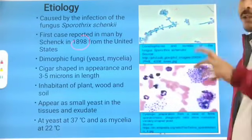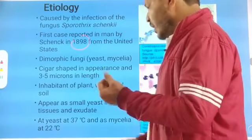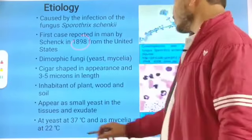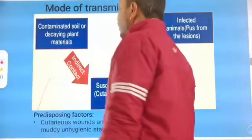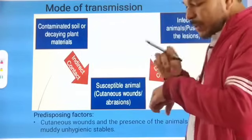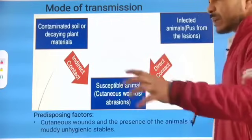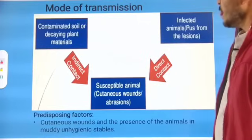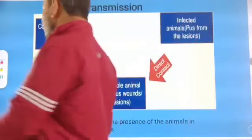The fungi are inhabitants of plant wood and soil. They appear as small yeast in tissues and exudate. At 37°C they grow as yeast and at 22°C as mycelia. The mode of transmission is through contaminated soil or decaying plant materials coming in contact with the susceptible animal, causing skin or tissue infection. Infected animals' pus from lesions can also be a source. Predisposing factors include cutaneous wounds and animals kept in muddy, unhygienic stables.